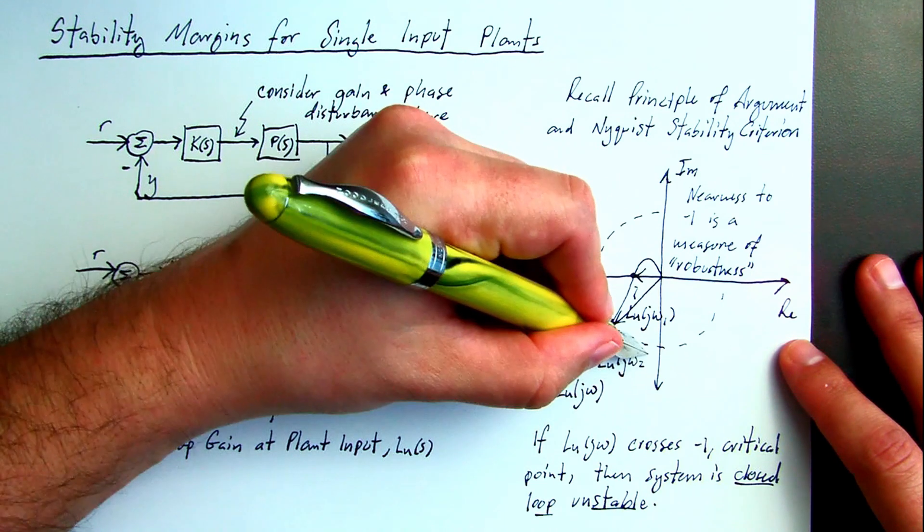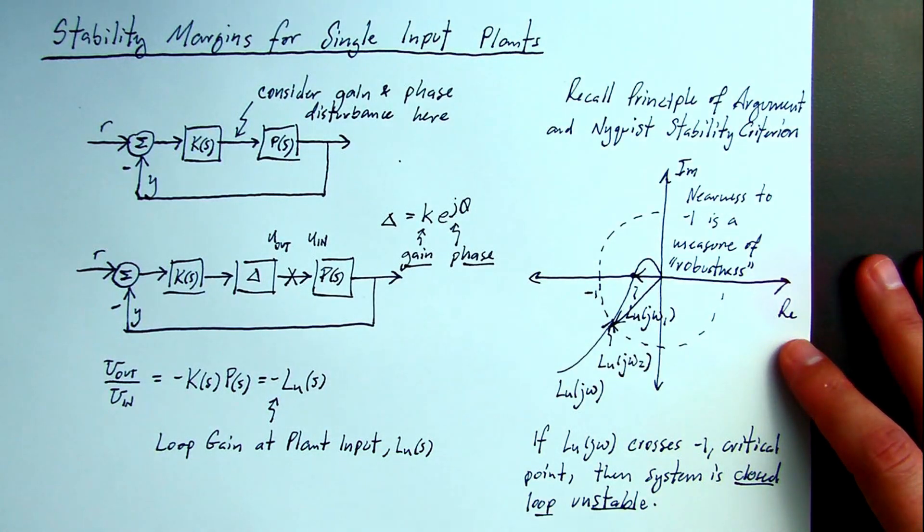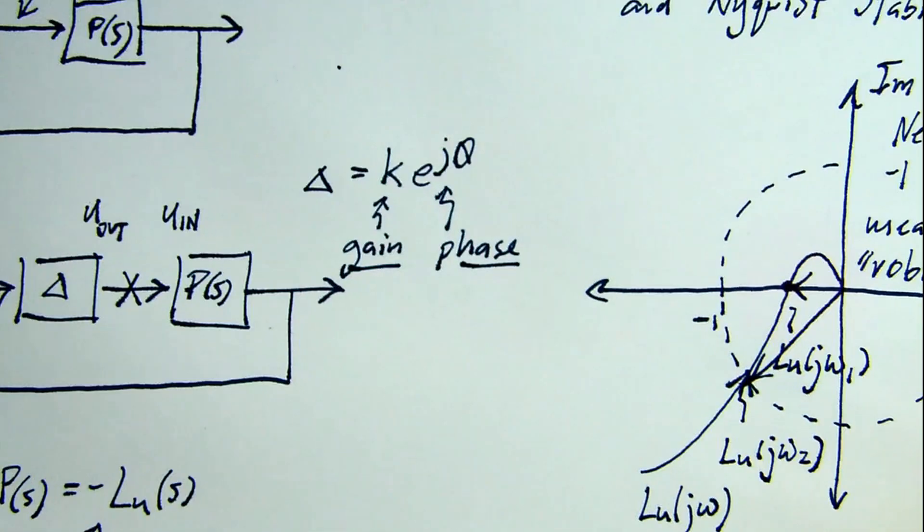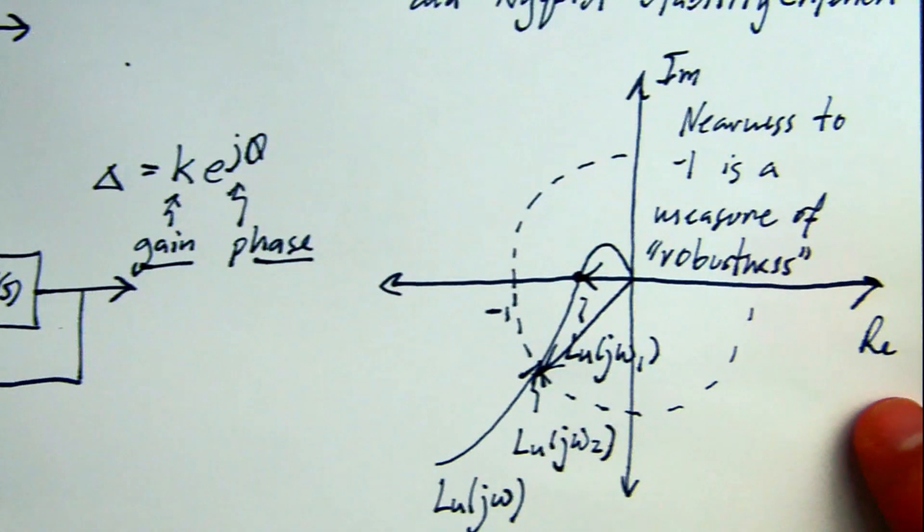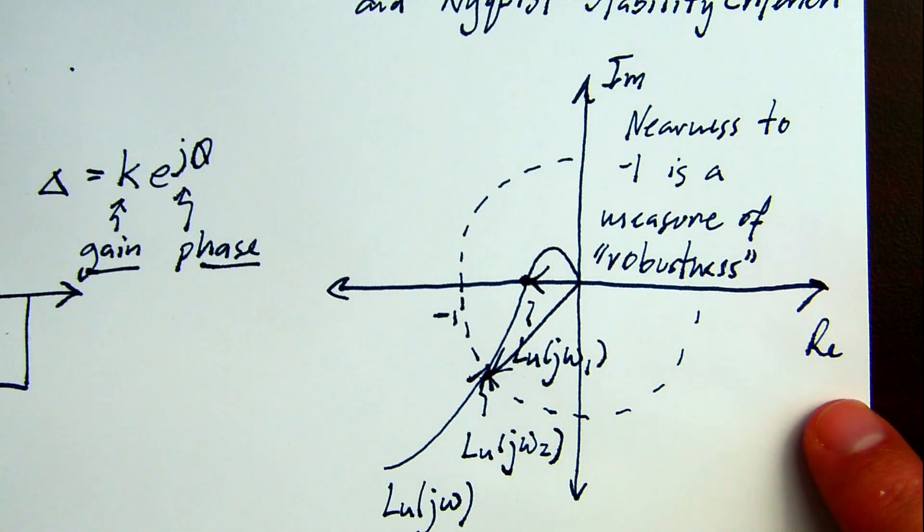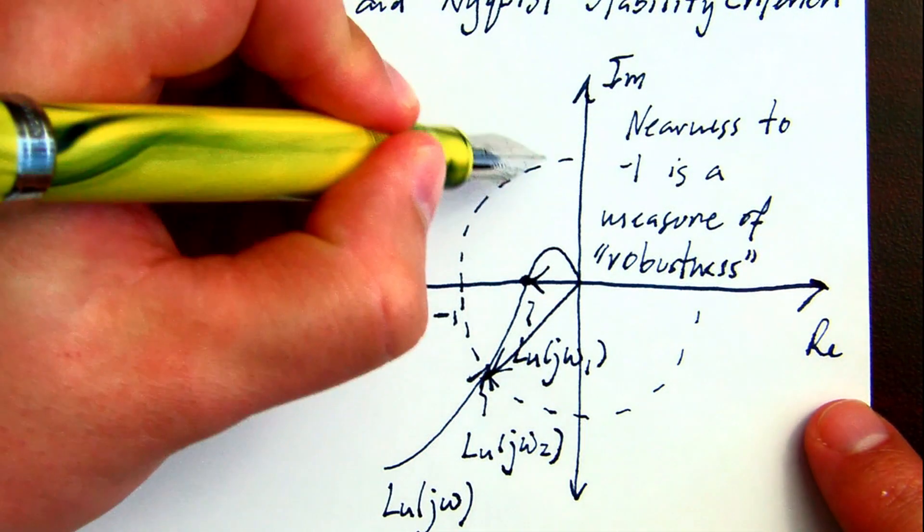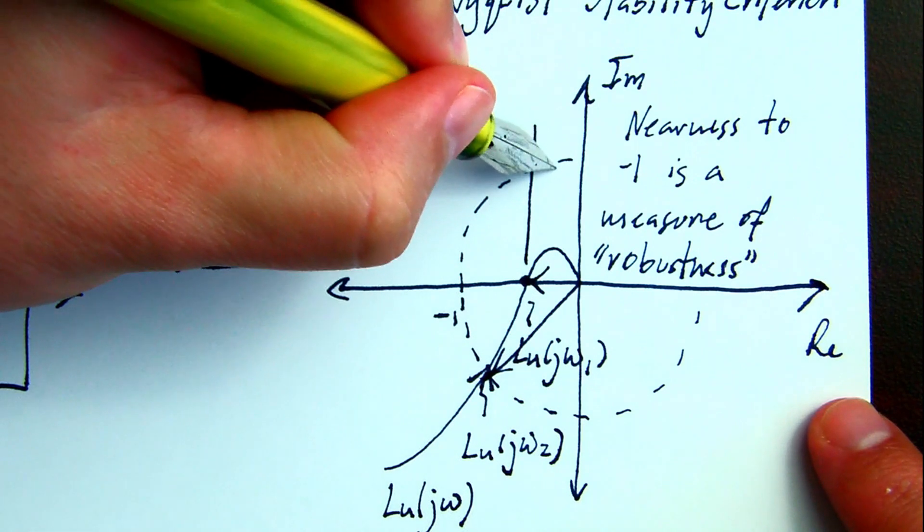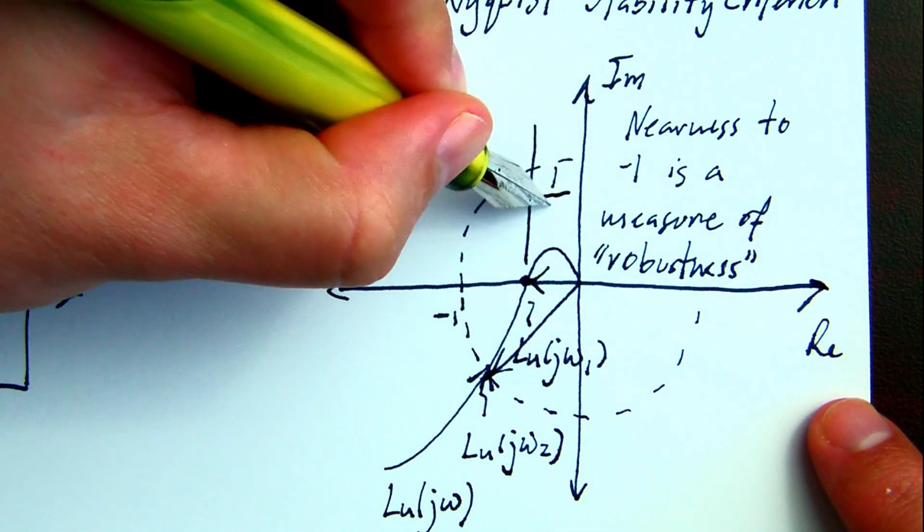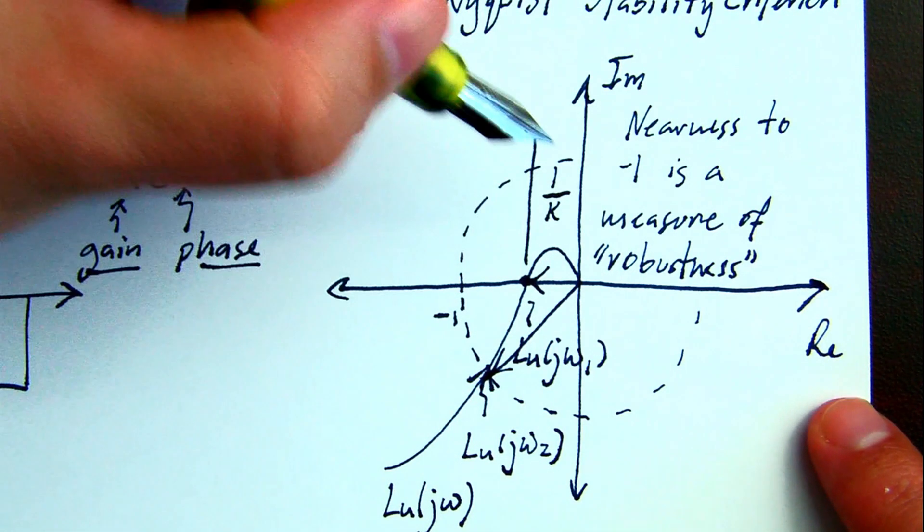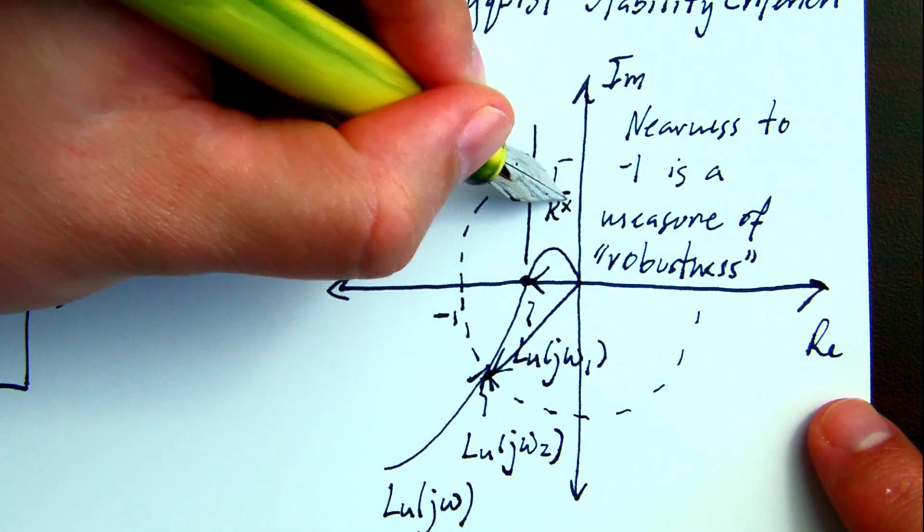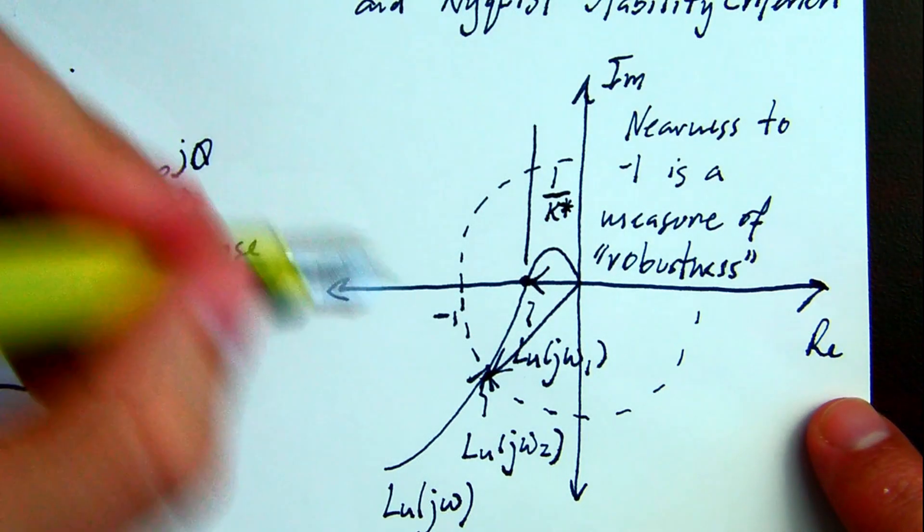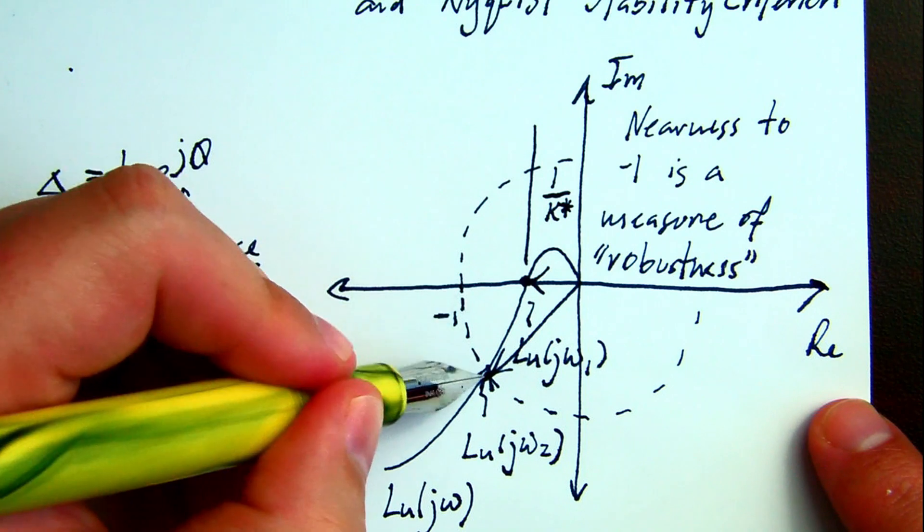Our stability margins related to gain and phase disturbance are derived from these phasors. The pure real phasor is related to the gain margin K-star. The phasor that touches the unit disk is related to the phase margin theta-star.